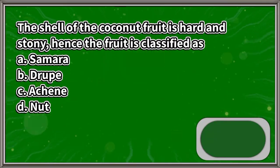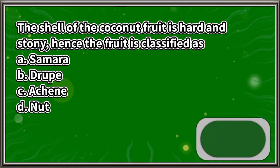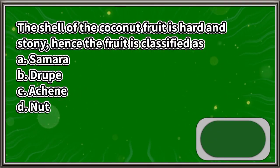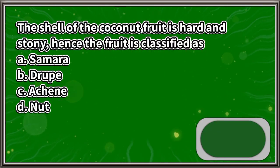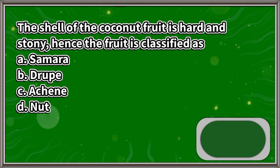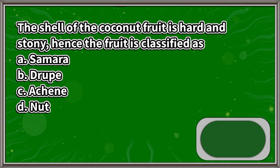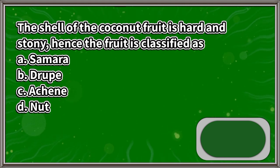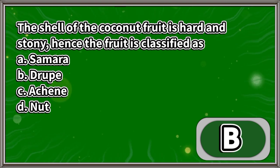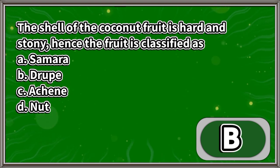The shell of the coconut fruit is hard and stony; hence, the fruit is classified as: A. Samara, B. Drupe, C. Achene, D. Nut. The answer is letter B.